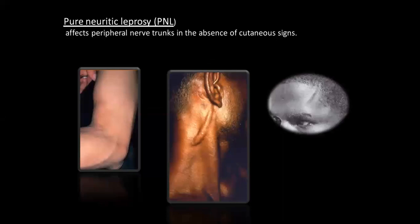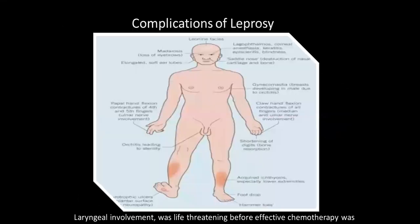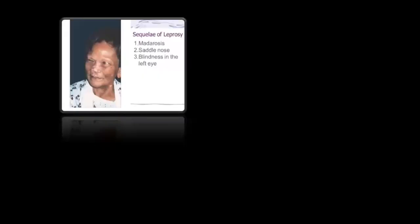Pure neuritic leprosy often affects the peripheral nerve trunks in the absence of cutaneous signs — the patient often doesn't present to the dermatology department. Complications of leprosy include leonine facies, madarosis, disfigured lobes, flexion contractures, gynaecomastia, claw hand, lagophthalmos, corneal anaesthesia, saddle nose, trophic ulcers, orchitis, shortening of digits, acquired ichthyosis, foot drop, and haematose. Saddle nose, blindness in the left eye, and auto-amputation are also seen.